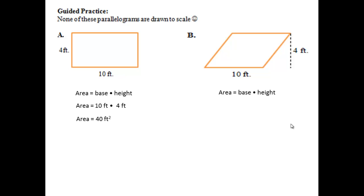It turns out you can find the area of any parallelogram using the same formula: area equals base times height. The base of this parallelogram is 10 feet, multiplied by the height of 4 feet, giving an area of 40 square feet. So these two shapes, although they look different, you can find their area by applying the exact same formula.